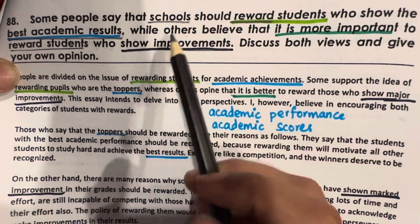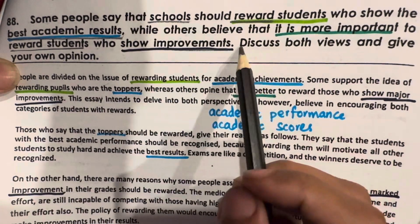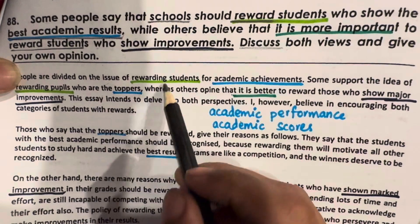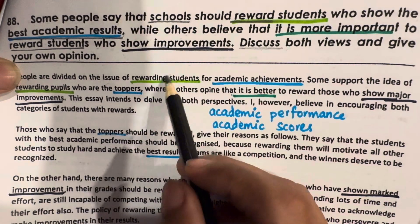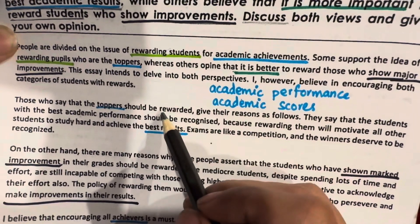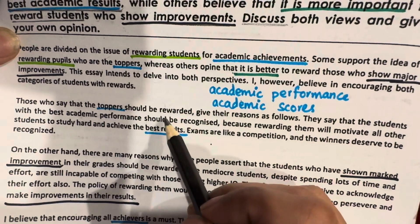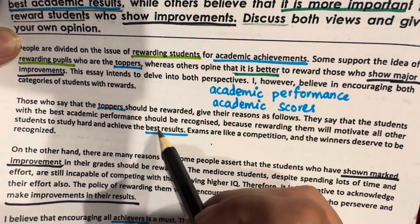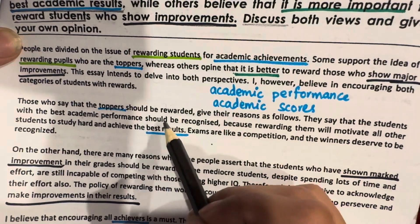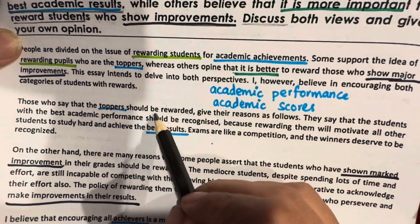This essay is about students and this is a discussion essay. First, we will write our introduction. Then the first body paragraph, in which we will discuss our first side — the benefits of rewarding toppers.